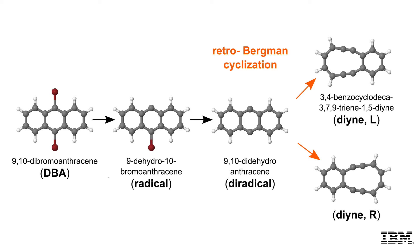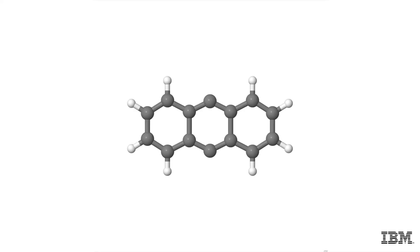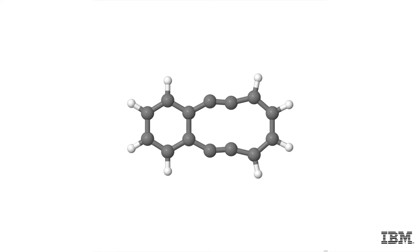When such a bond is broken, the two 6-membered rings open to a 10-membered ring. This can happen on either side of the molecule. It is also possible to convert the 10-membered ring back to two 6-membered rings, which is then called Bergmann cyclization. This reaction represents a switch between a tri-cyclic and di-cyclic system.